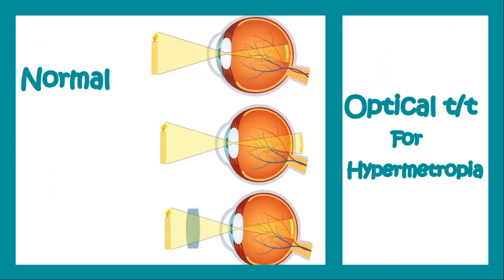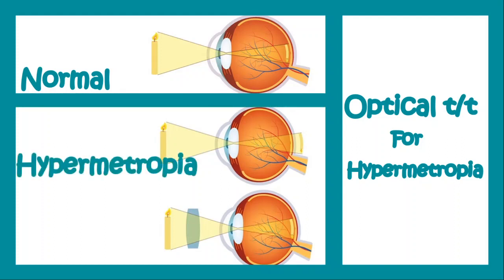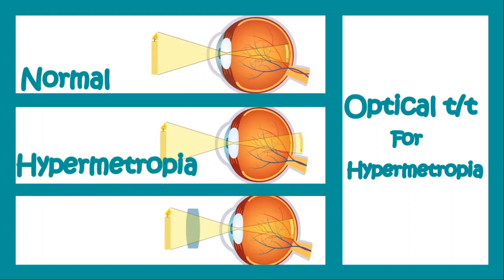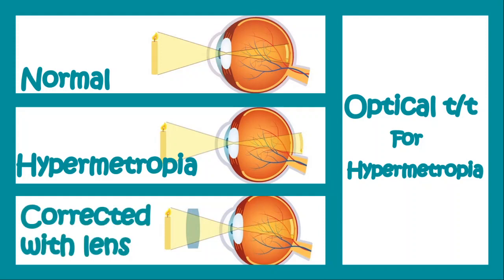For the optical treatment: in normal eyes, light rays falling on the eye form a sharp image over the retina by convergence, but in hypermetropia that convergence occurs behind the retina, giving a blurred image on the retina. To correct that, we simply put a convex lens, and the problem gets solved — the sharp image is formed on the retina.